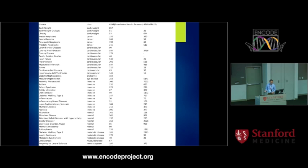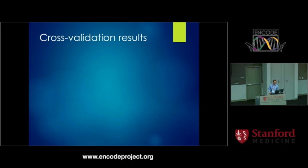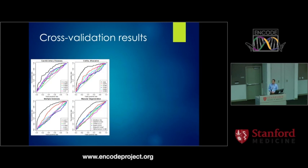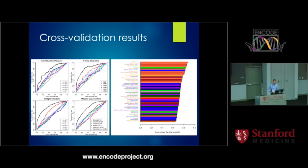These are a partial list of the diseases we studied — very diverse, with the number of variants ranging from several hundred down to as low as 50. The ROC curves from four selected disease types show our method, the black curve, outperforming the others. Overall, all 45 diseases gave an AUC greater than 0.6, and some are as high as above 0.8, which is quite encouraging.